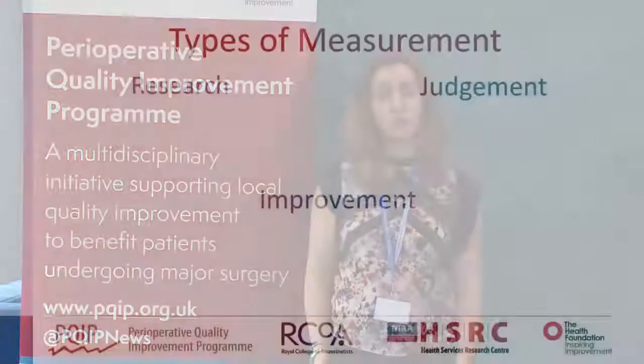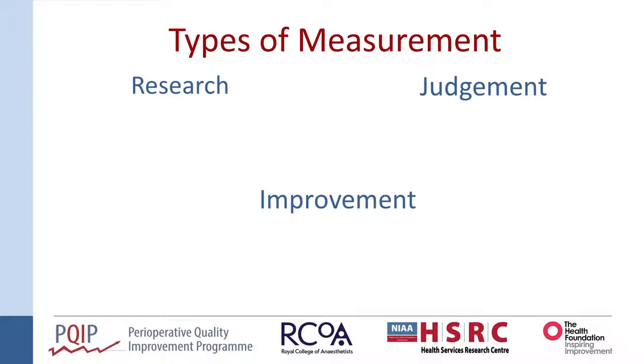Well, it's by keeping it simple. Measurement in the literature is split into three things: measurement for research, measurement for judgment, and measurement for improvement. Let's look at each of these in turn.